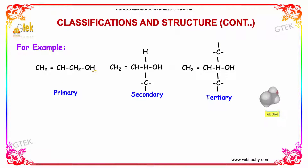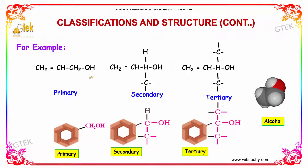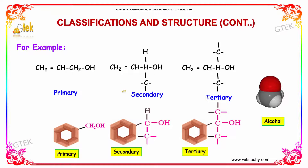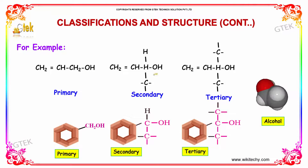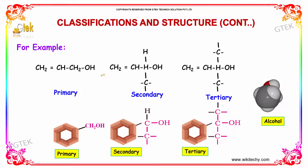For example, as seen previously, a primary alcohol has one methyl group, secondary has two, and tertiary has three methyl groups attached to the carbon atom bearing the OH group.